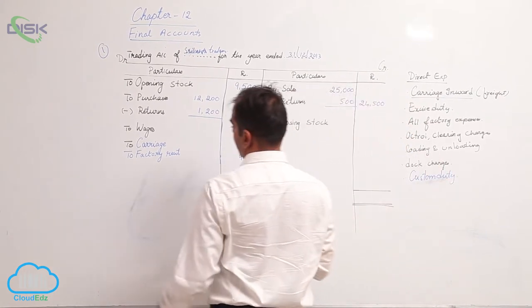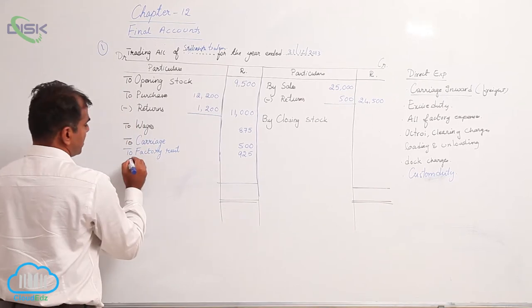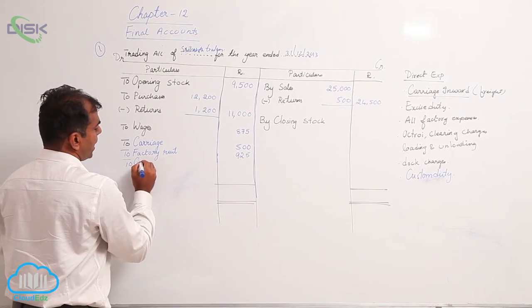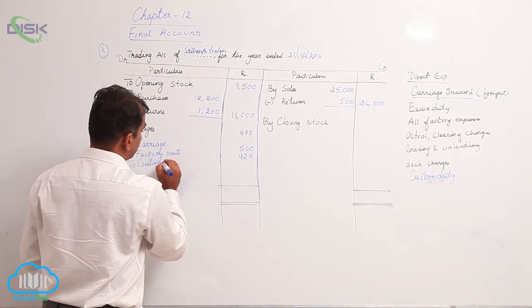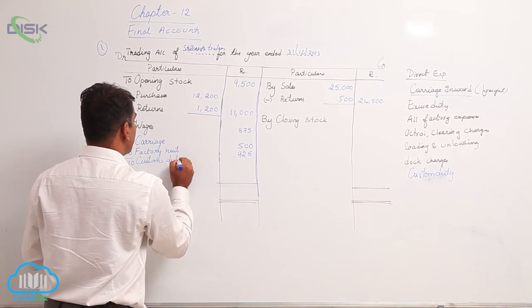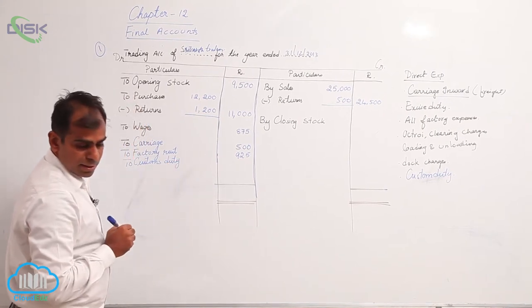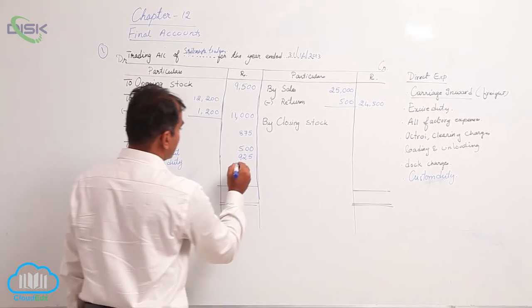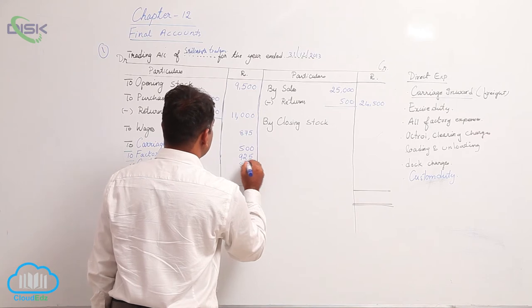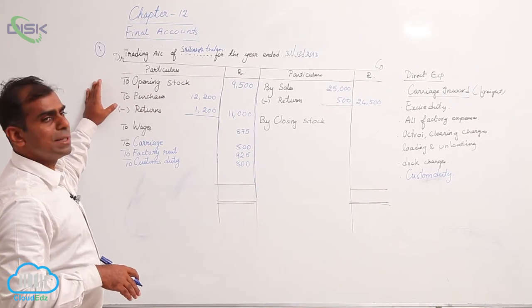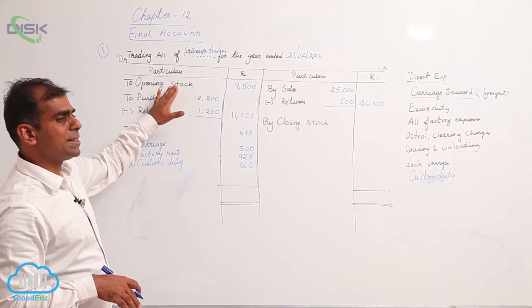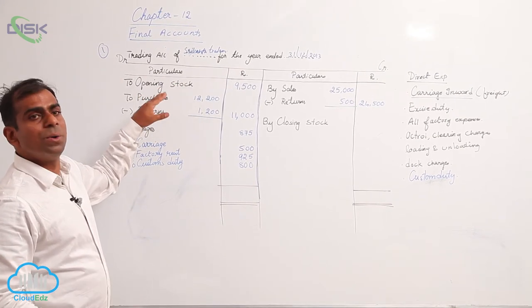Now next you are given closing stock. As already discussed we said usually we take closing stock whenever purchases are not adjusted. How do you know whether purchases are not adjusted? Usually when you are given purchase returns and purchases and opening stock generally we consider purchases as not adjusted.